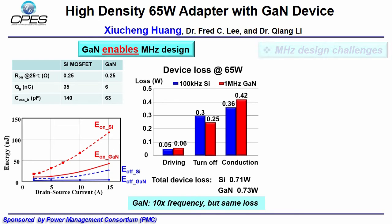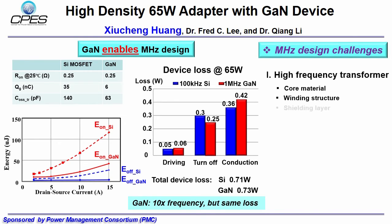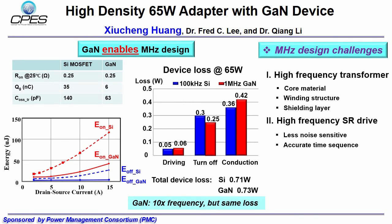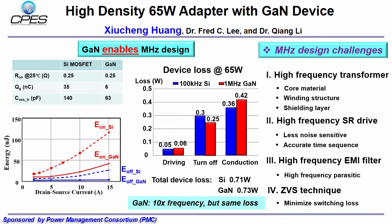As you know, the MHz system design has a lot of system challenges. First is the high frequency transformer design with the right material, proper winding structure, and an embedded shielding layer which tackles the common mode noise issue. The second is the high frequency synchronous rectifier driving method with noise immunity and accurate time sequencing — commercial ICs won't work for MHz range. The third is the EMI filter design including high frequency parasitic impacts. Last but not least, zero voltage switching must be guaranteed to minimize switching loss.